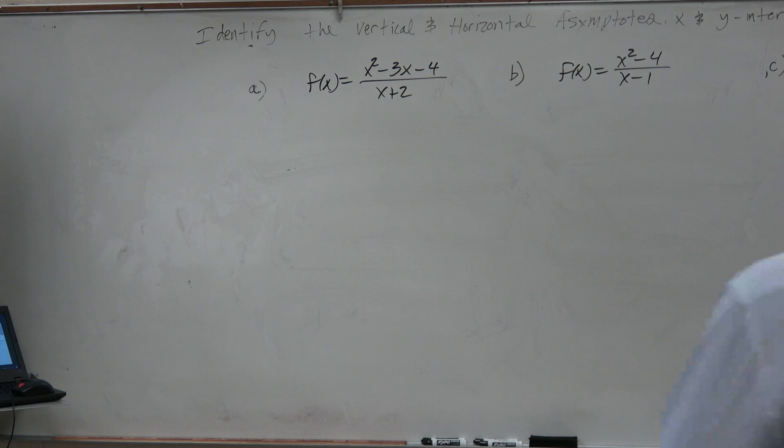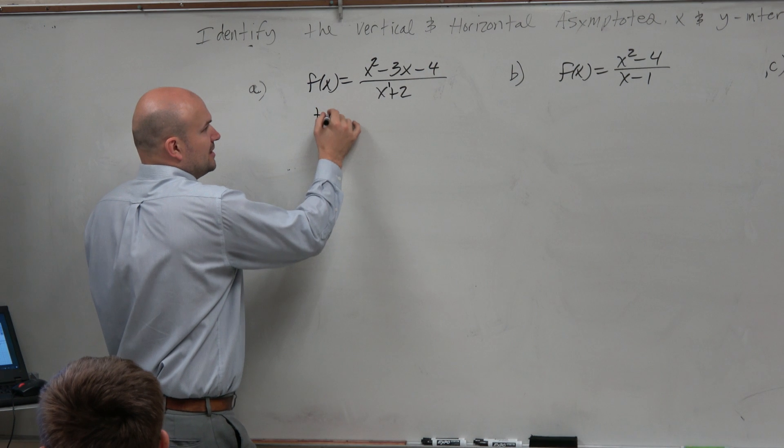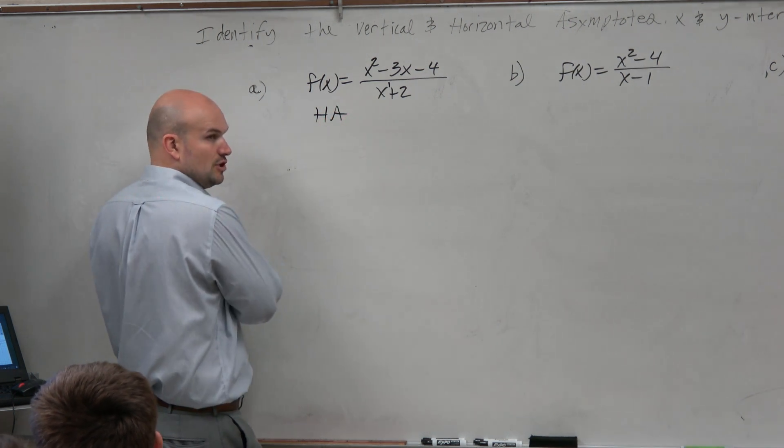So if I'm looking for what are the asymptotes, you say, oh, the degree in the numerator is larger than the degree in the denominator. So there's no horizontal asymptote.